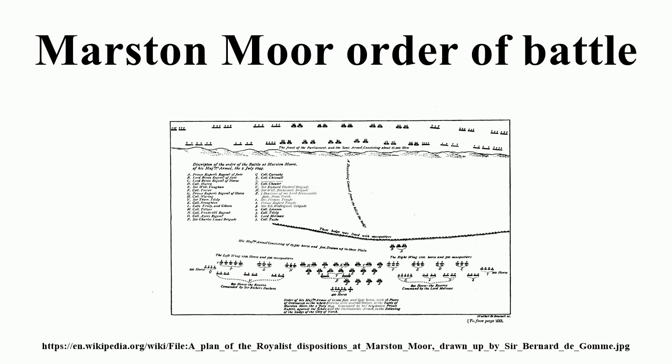Parliamentarian Army of the Eastern Association. Captain General Earl of Manchester. Lieutenant General of the Horse Oliver Cromwell. Commissary General Bartholomew Vermoidon. Earl of Manchester's Regiment, Lieutenant General Cromwell's Regiment, Commissary General Bartholomew Vermoidon's Regiment, Charles Fleetwood's Regiment. Dragoons: Lieutenant Colonel John Lilburn's.